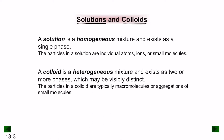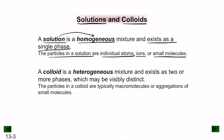A solution is a homogeneous mixture existing as a single phase, where particles are individual atoms, ions, or small molecules. A colloid is a heterogeneous mixture that exists as two or more phases which may be visibly distinct. In a solution you cannot visibly distinguish the two parts; in a colloid you can. An example of a solution is sugar water — a clear, single-phase liquid. A colloid example is an emulsion such as paint, or sand poured into water.